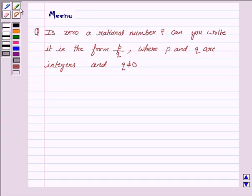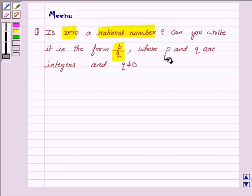Is zero a rational number? Can you write it in the form P by Q, where P and Q are integers and Q not equal to zero?